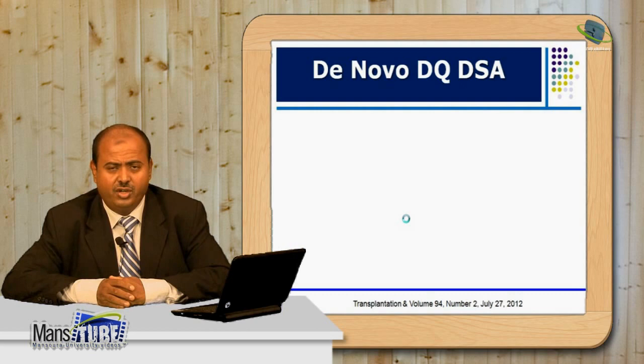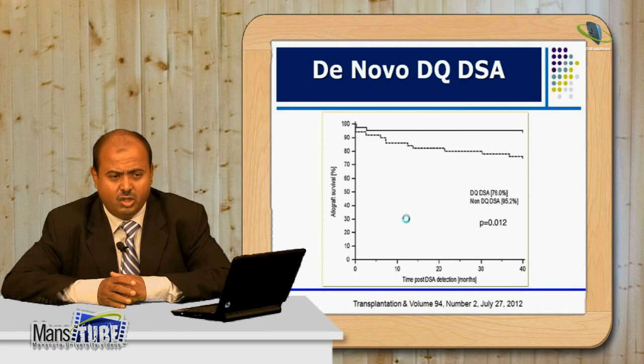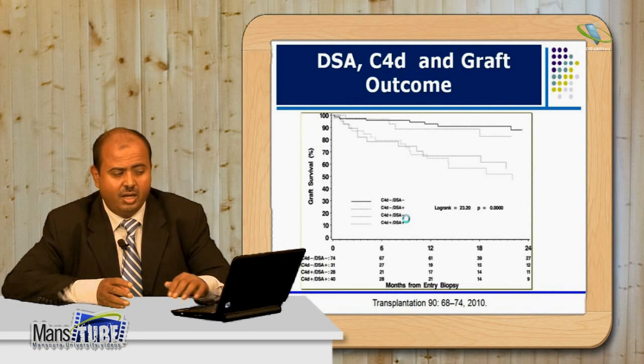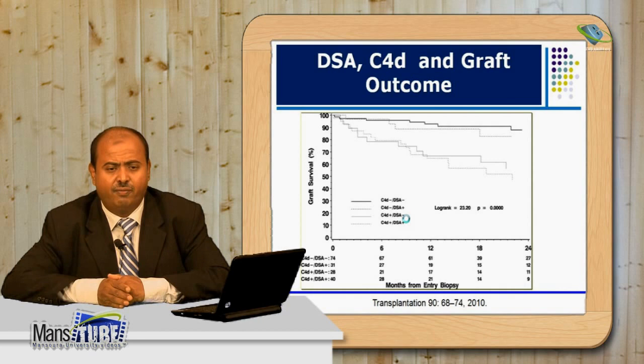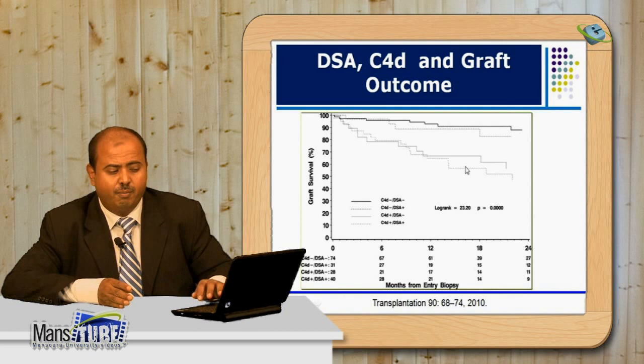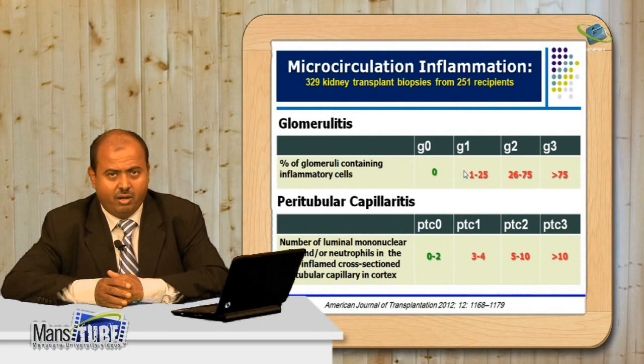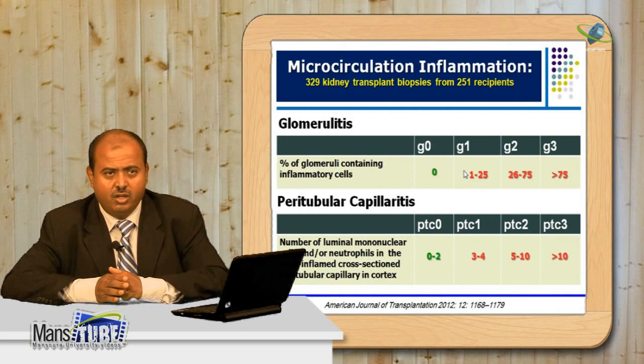The entity of de novo DQ donor-specific antibody is important: presence of DQ DSA is associated with poor graft survival outcome. Furthermore, if DSA is present in the serum plus complement deposition in tissues, this combination carries a very poor risk for graft survival.